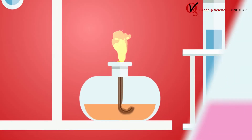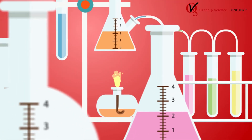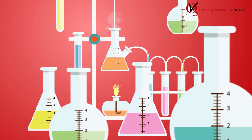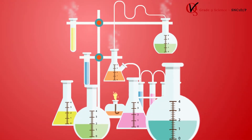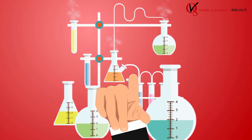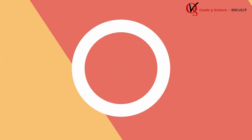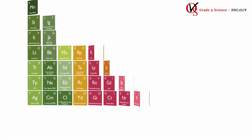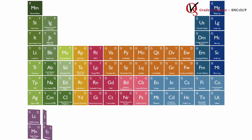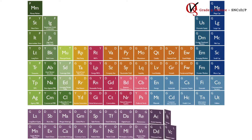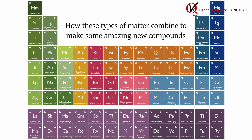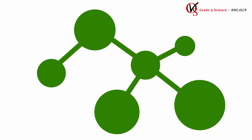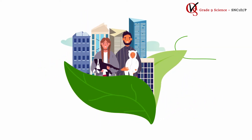Chemistry: everything is made up of matter, and since chemistry is the study of matter, chemistry is basically the study of absolutely everything, including you. In this unit, we learn about the periodic table, which lists all the types of matter found on Earth. We will also show you how these types of matter combine to make some amazing new compounds, each with their own special properties that make life possible.